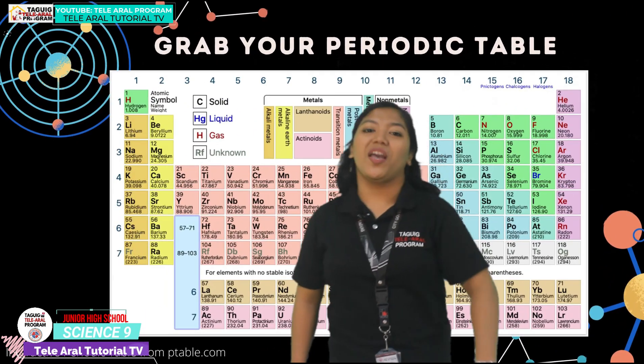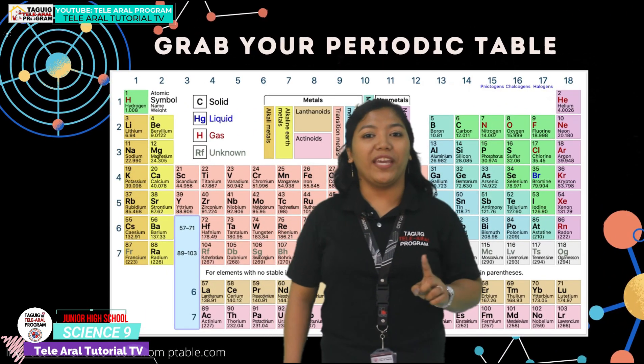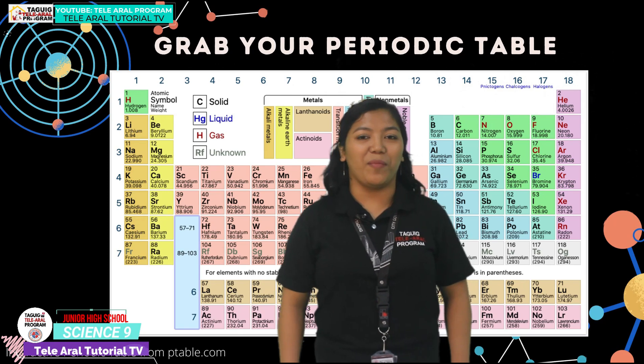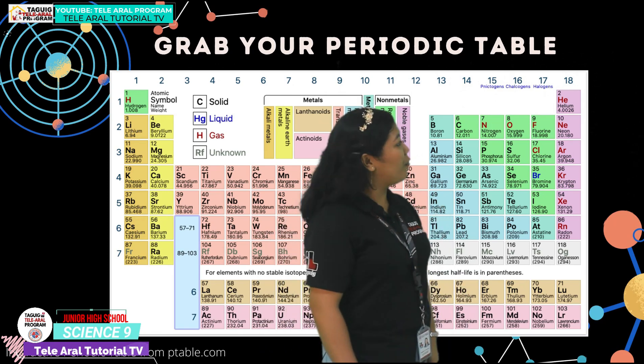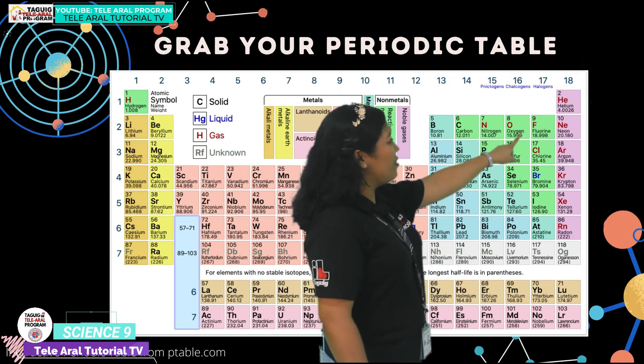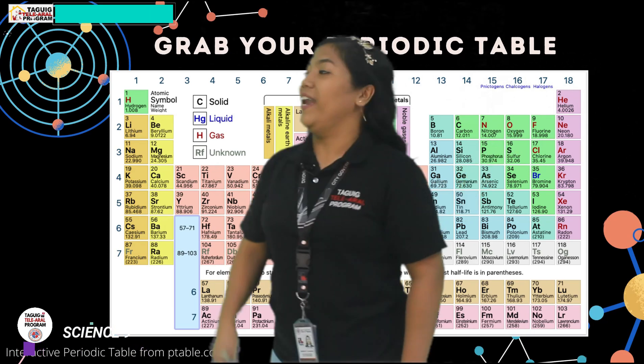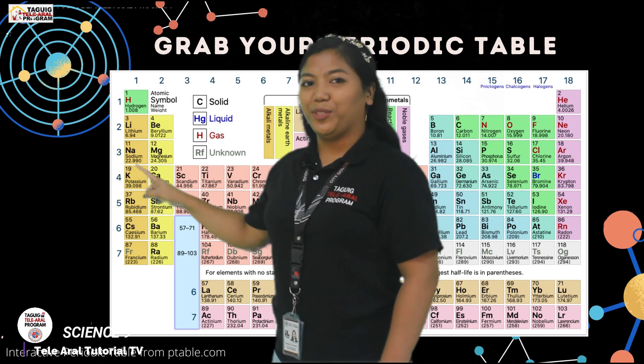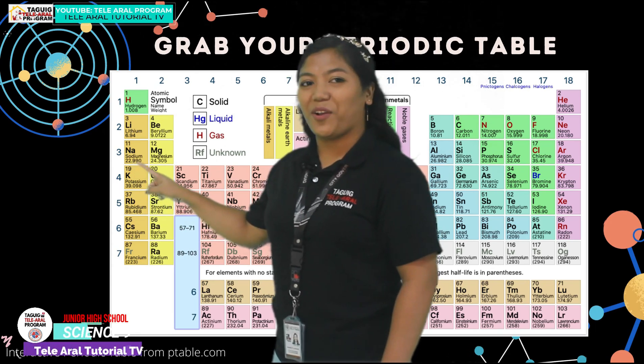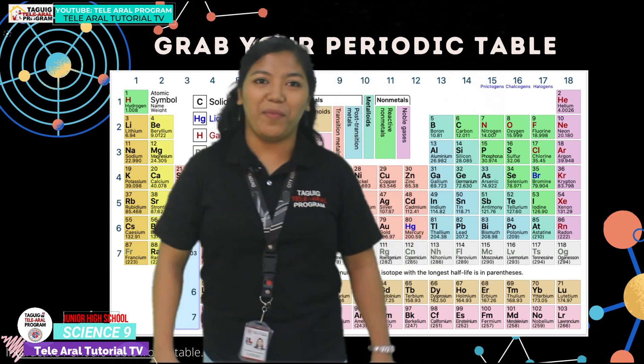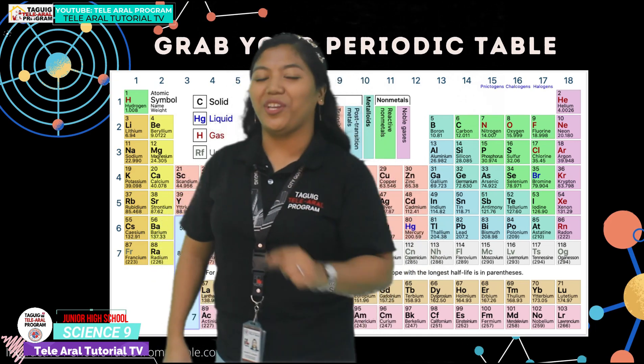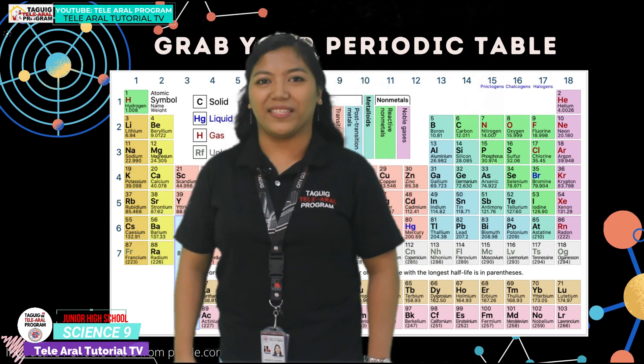Let's now try this. Grab your periodic table and locate the element to identify its atomic number. Let's start. First, oxygen. What is its atomic number? Now you know the atomic number, let's write the electronic configuration of these elements.